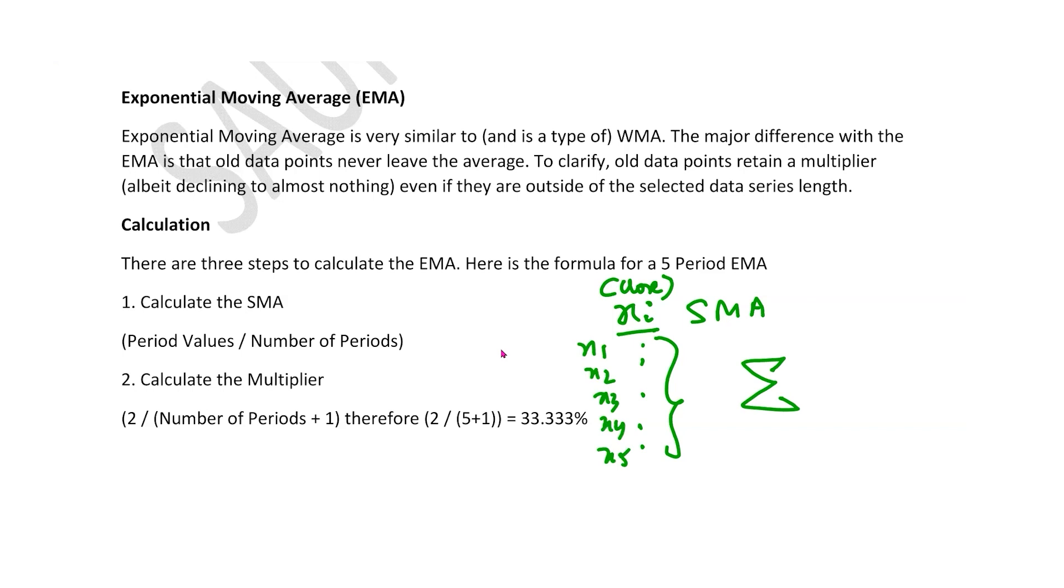So actually what is SMA? It is x1 plus x2 plus x3 plus x4 plus x5 divided by 5, correct? Isn't that what we had calculated? Yes. So summation of x1, x2, x3, x4, x5.